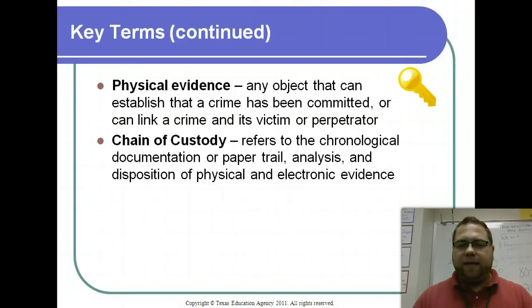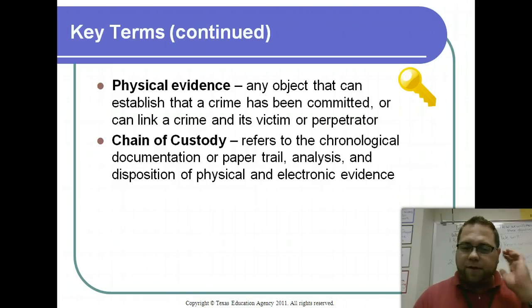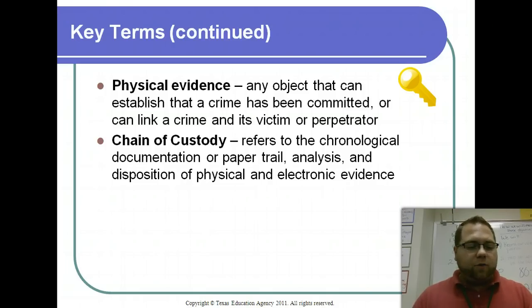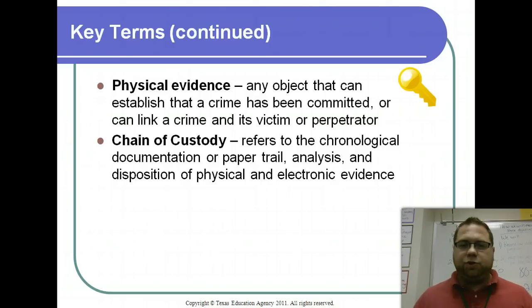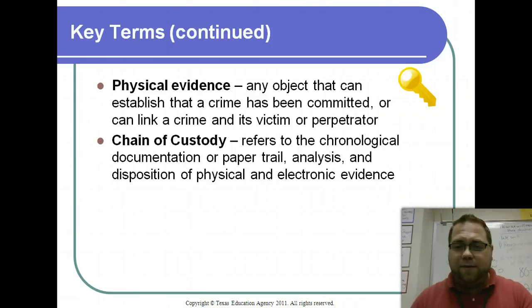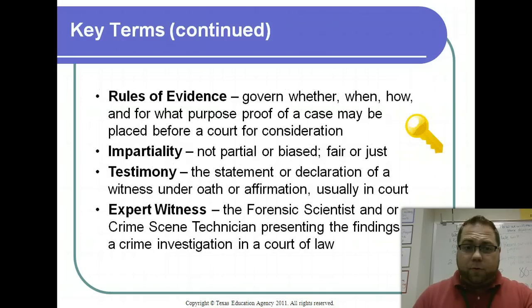Physical evidence: any object that can establish that a crime has been committed or can link a crime to its victim or perpetrator. Chain of custody: you've heard this mentioned a couple of times, and it will be very important as we start looking at crime scenes. It is the chronological documentation of what happens to evidence from the crime scene to the lab to the safe locker, wherever it ultimately goes. You have to track it the entire way — if evidence gets lost or the paper trail ends or is incomplete, it cannot be used.